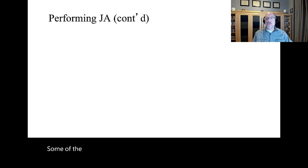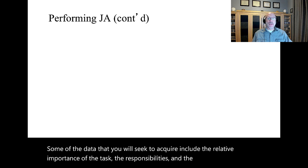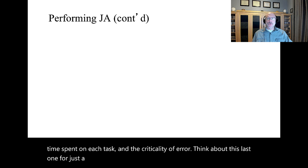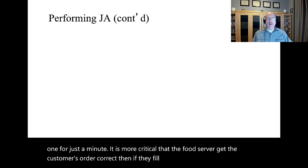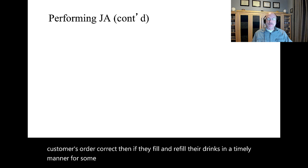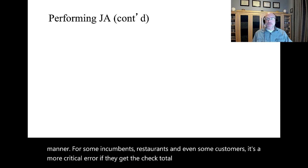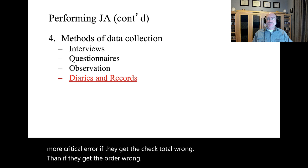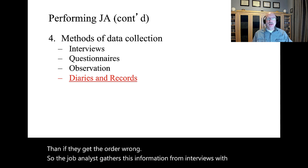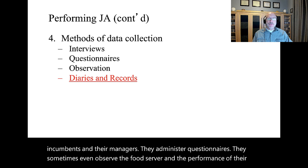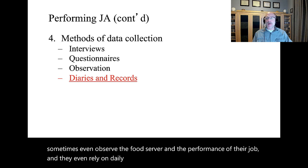Some of the data that you will seek to acquire include the relative importance of the task, the responsibilities, and the skills, the amount of time spent on each task, and the criticality of error. Think about this last one. It is more critical that the food server get the customer's order correct than if they fill and refill drinks in a timely manner. For some incumbents, restaurants, and even some customers, it's a more critical error if they get the check total wrong than if they get the order wrong. So the job analyst gathers this information from interviews with incumbents and their managers, administers questionnaires, sometimes observes the food server in the performance of their job, and relies on daily diaries and records.